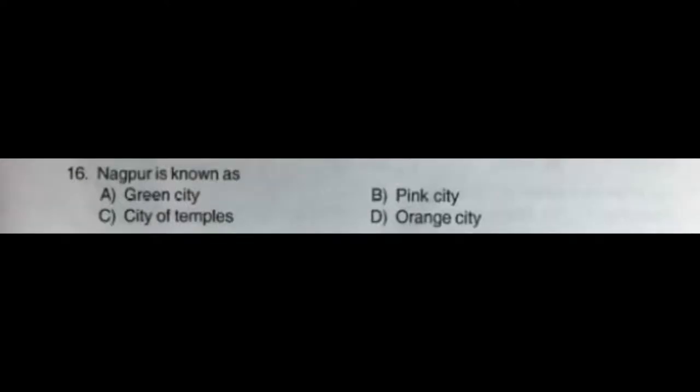Question number sixteen: Nagpur is known as — option A: green city, option B: pink city, option C: city of temples, option D: orange city. The correct answer is option D: orange city. Question number seventeen: Which is image editing software — option A: Microsoft, option B: Photoshop, option C: PageMaker, option D: Excel. The correct answer is option B: Photoshop.